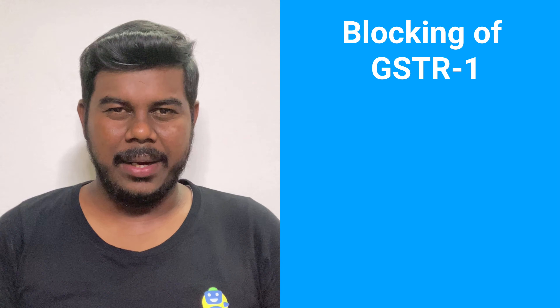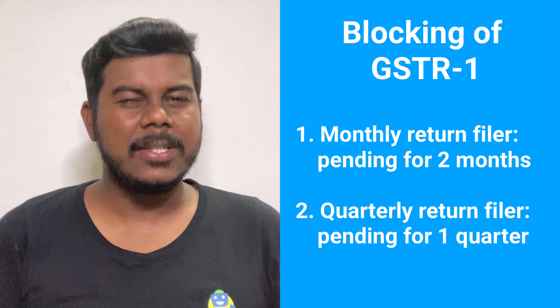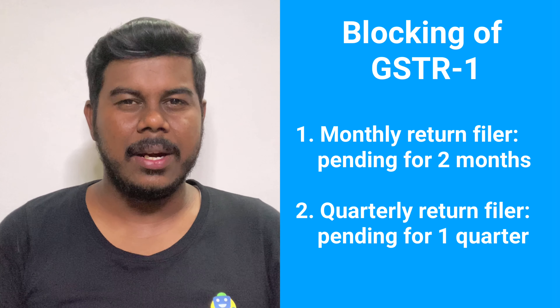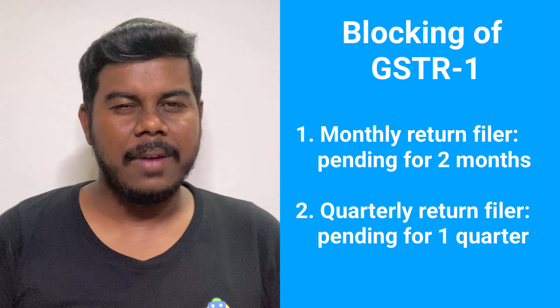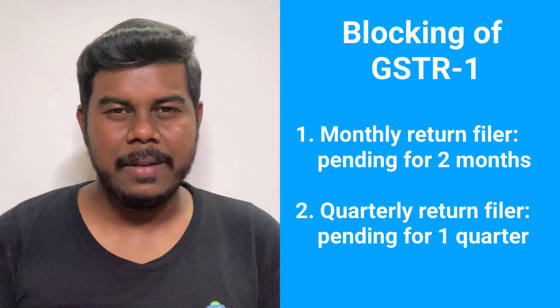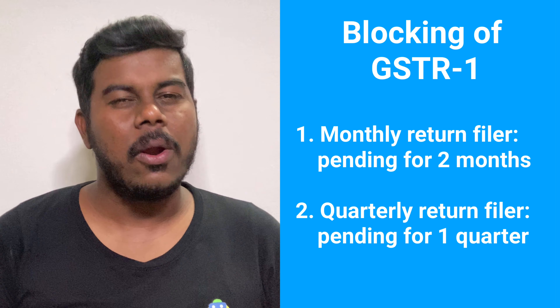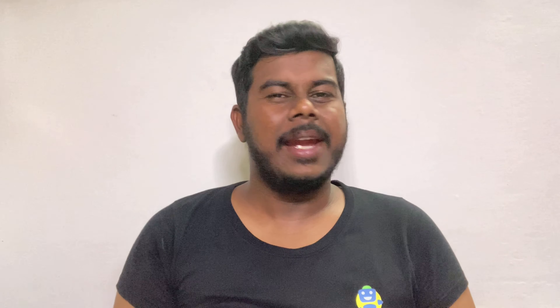What is the blocking of GSTR 1? GSTR 1 will be blocked if the taxpayer fails to furnish GSTR 3B for two consecutive months. Similarly, if a quarterly filer fails to furnish GSTR 3B for a previous quarter, they shall not be permitted to file GSTR 1 for the next quarter. This new rule is applicable from 1st January 2021.